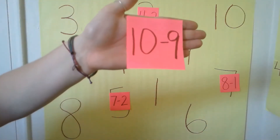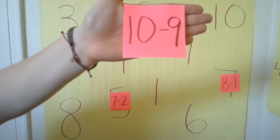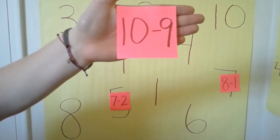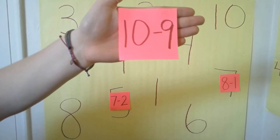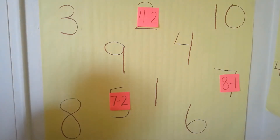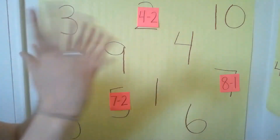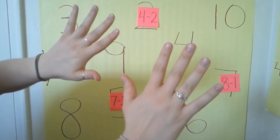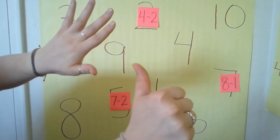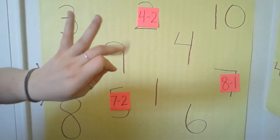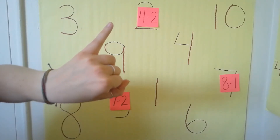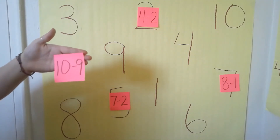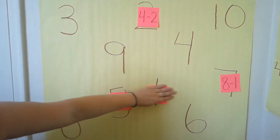What does this number sentence say? Ten minus nine. What is the answer for ten minus nine? Let's check your answer using our fingers. Put up ten fingers. How many fingers do we take away? Nine. So we're going to take away nine. One, two, three, four, five, six, seven, eight, nine. How many fingers are up? One. So our answer to ten minus nine is one. Do you see the one? Good job.